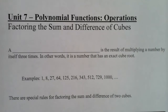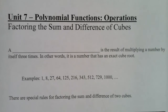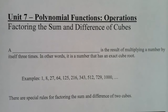This is the new unit in Algebra 2 — Unit 7. It's called Polynomial Functions Operations. And this is Lesson 1: Factoring the Sum and Difference of Cubes. This is a very fast lesson; it's only one page front and back.